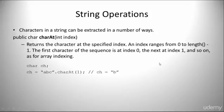Now let's take a look at string operations. Characters in a string can be extracted in a number of ways. The charAt method returns the character at the specified index. An index ranges from 0 to length minus 1. The first character of the sequence is at index 0, the next at index 1, and so on — similar to array indexing.